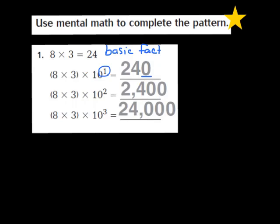Let's take a look at the second part of this problem. This time they take 8 times 3, and they multiply it by the second power of 10. My exponent is a 2, so what I notice is that to my 24, they've now added two 0s — here's 1 and here's 2.